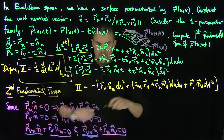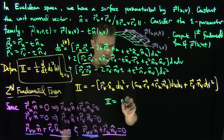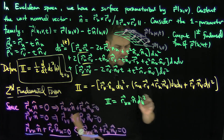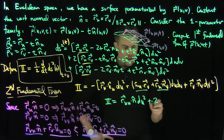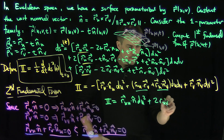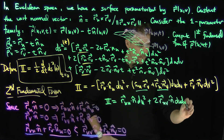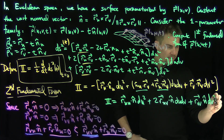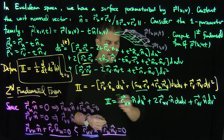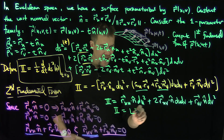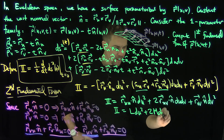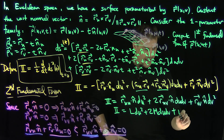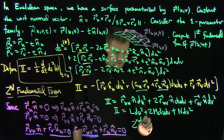This allows me to write the second fundamental form as: r_uu dot n-hat du squared, plus two times r_uv dot n-hat du dv, plus r_vv dot n-hat dv squared. In standard notation in textbooks, this is written as l du squared plus two m du dv plus n dv squared, and this is the second fundamental form of a surface.